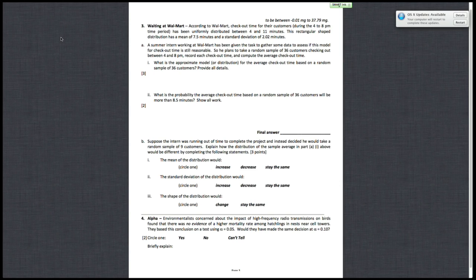So for 3, waiting at Walmart. According to Walmart, the checkout time for their customers during the 4-8pm time period has been uniformly distributed between 4 and 11 minutes. This rectangular shape distribution has a mean of 7.5 minutes and a standard deviation of 2.02 minutes. So from this distribution, we want to gather some data to assess if this model for the checkout time is still reasonable.